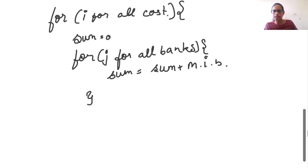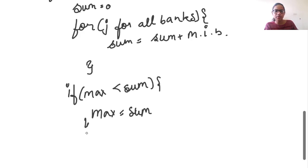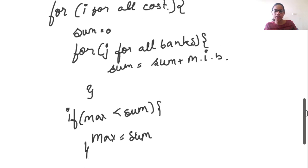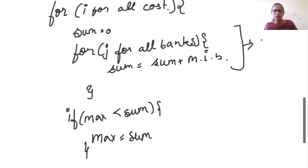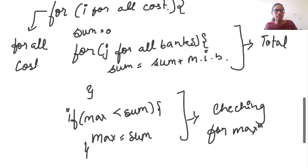We have sum, and then a conditional statement: if max is less than sum — or if sum is greater than max — then max = sum. Then we return max, coming out of both for loops and returning max. So it's that simple: we are totaling the wealth, then checking for maximum value for all customers.